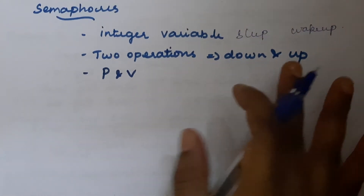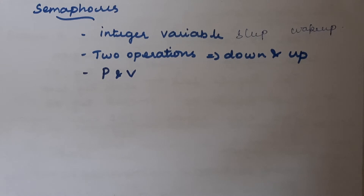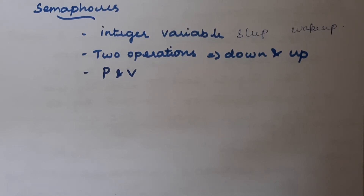When a process wants to wait for another process to execute, we are not implementing busy waiting — the traditional method — because it wastes a lot of CPU cycles. In a multiprocessor system, this becomes a major problem as it degrades CPU performance. So instead we go with the concept of blocking: when a process wants to wait for another process, it should be blocked using the sleep operation, and resumed using the wake up operation.